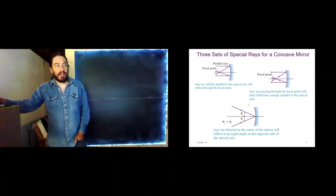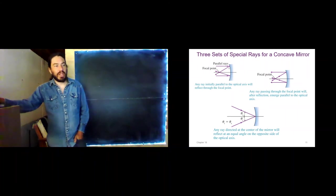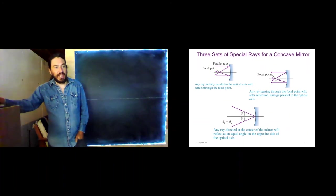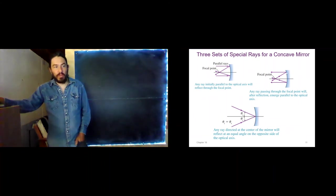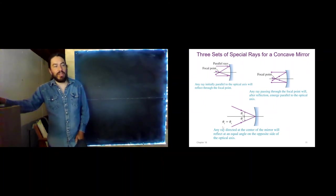The three sets of special rays for a concave mirror look like this. One ray comes in parallel to the optical axis and gets reflected back through the focal point. If we were to reverse these arrows, the same thing holds — any ray that goes through the focal point on its way to the mirror will be reflected off parallel to the optical axis. And one ray through the center will bounce off with the angle of incidence equal to the angle of reflection.